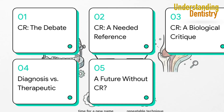Here's our game plan. First, we're going to unpack the debate itself. Then we'll look at the strong arguments for CR as a necessary clinical reference. After that, we'll flip the coin and explore the biological critique that questions its validity. Then we'll see how this all shakes out in the real world — the conflict between diagnostic and therapeutic uses. And finally, we'll ask the big question: what does the future actually hold for centric relation?